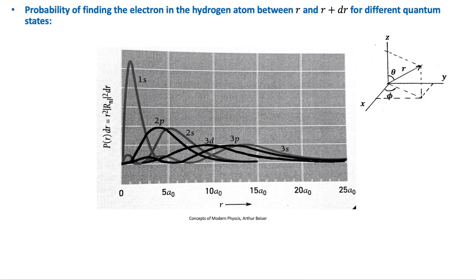The state whose most probable location matches the Bohr radius is the one with the highest angular momentum for that particular principal quantum number n. The highest angular momentum for n equal to 1 is s, for n equal to 2 is p, and for n equal to 3 is d. As you can see, the most probable locations for 1s, 2p, and 3d match the Bohr predictions.